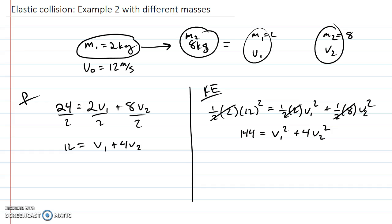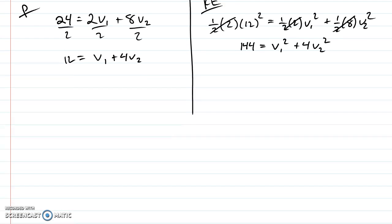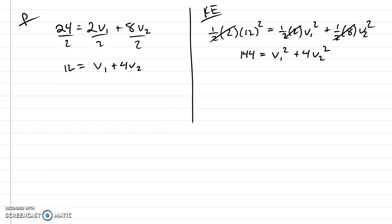All right, now we need to get one of these equations to get one variable alone, so that we can plug it into the other. And I'm thinking, right here, we can get v1 alone very easily. So if I subtract 4v2 to the other side, that's going to be v1. So instead of writing v1 in the other equation, I'm going to plug in 12 minus 4v2.